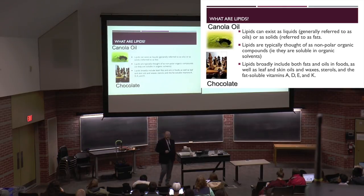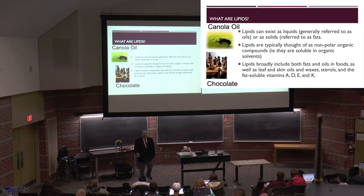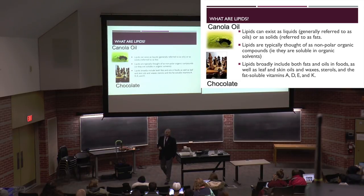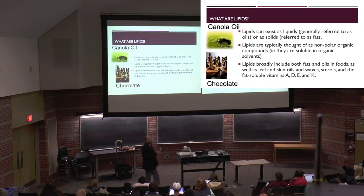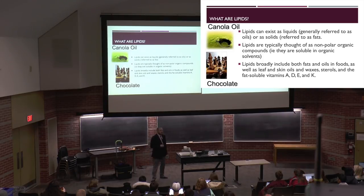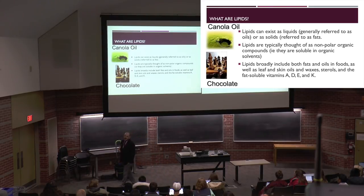Today we're going to talk about the major class, which is triacylglycerols. The other major components when we talk about lipids are things like cholesterol, phospholipids, sphingolipids, ceramides. These are all the polar or apolar lipids. They typically are used more as minor ingredients, things like surfactants in the food industry, and in some cases don't really play a major role. Things like sphingolipids are very important for molecular messaging. Today we're going to specifically focus on triacylglycerols, which are what we typically talk about when we talk about fats and oils.